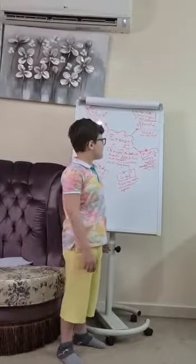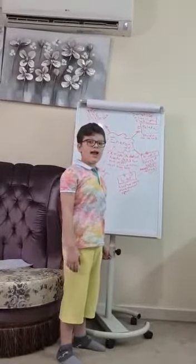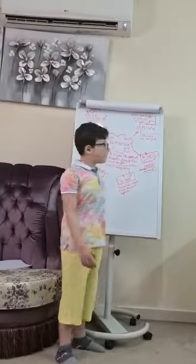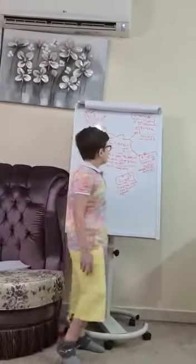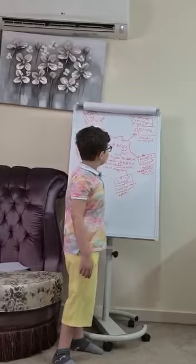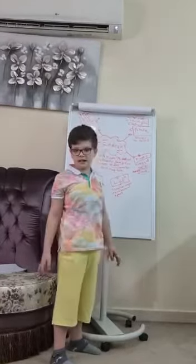Potential energy is the energy stored in an object. There are three forms of potential energy: gravitational energy, chemical energy, and elastic energy.